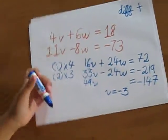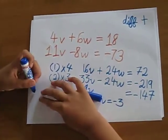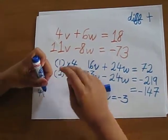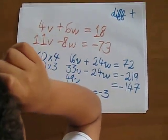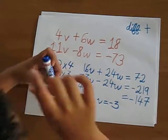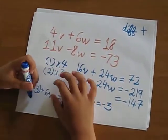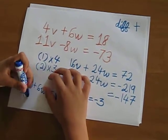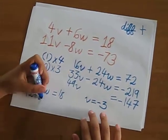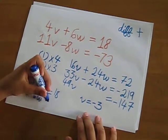Let's check the first equation. 4 times minus 3 plus 6w equals 18. That's minus 12 plus 6w equals 18.